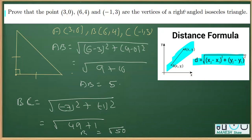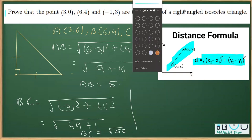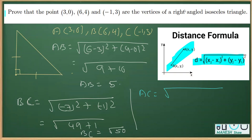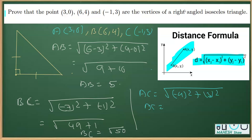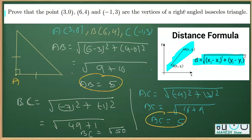That's the length of BC. Same way we are going to get the length of AC. Using the coordinates of A (3, 0) and C (-1, 3): (x₂ - x₁)² is (-1 - 3)², that is (-4)², plus (y₂ - y₁)² that is (3 - 0)², which is (3)². So AC is equal to the square root of 16 + 9, which is the square root of 25, which is 5. Now we know that two sides are equal: AB = 5 and AC = 5, so AB is equal to AC.